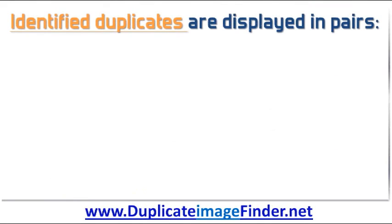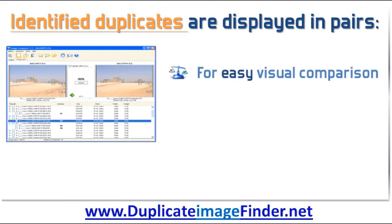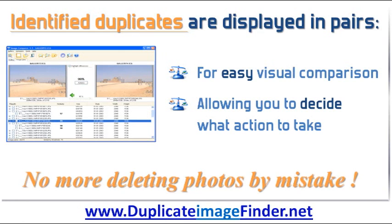Images that match can be displayed in more than one way. One way is with identified duplicates being shown in pairs for easy visual comparison before you decide what action to take. This prevents photos being deleted by mistake.